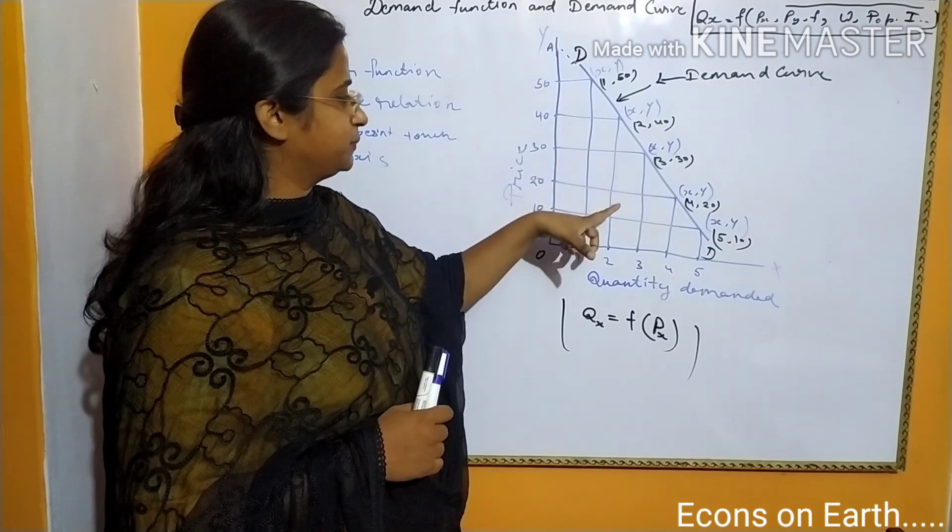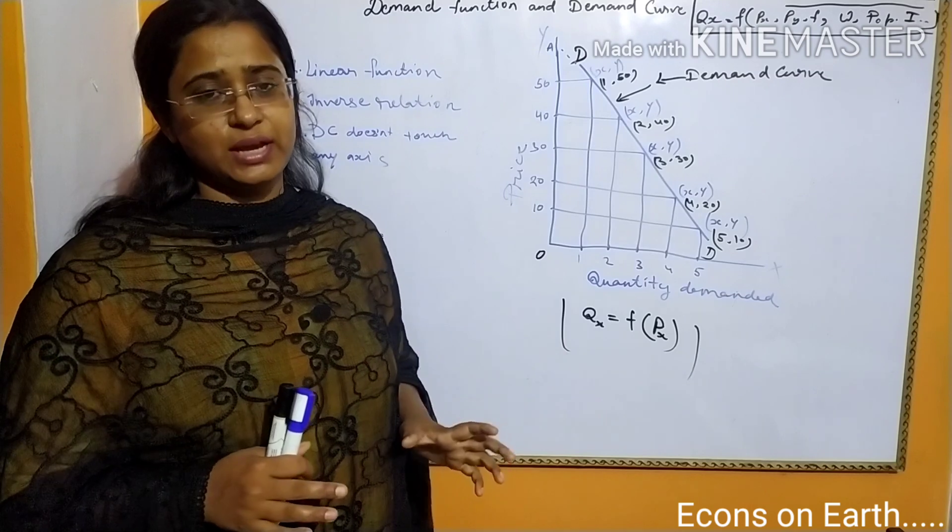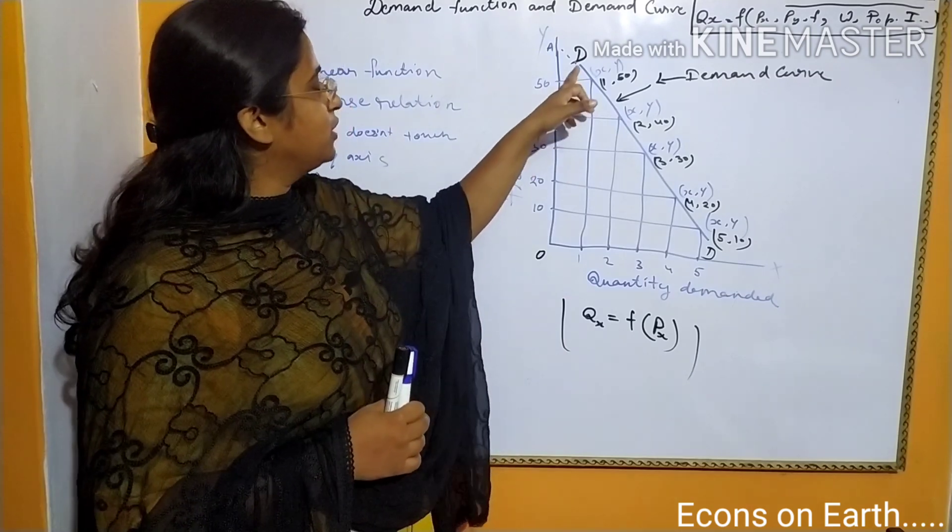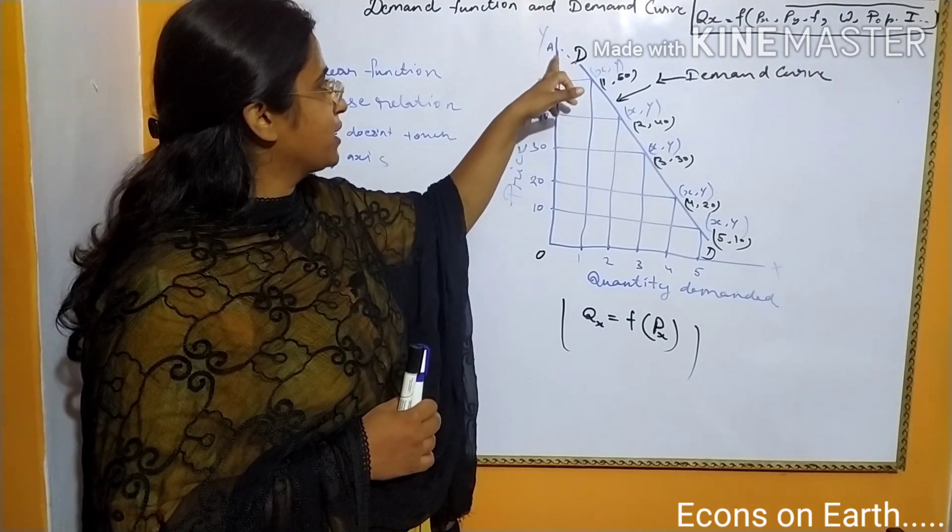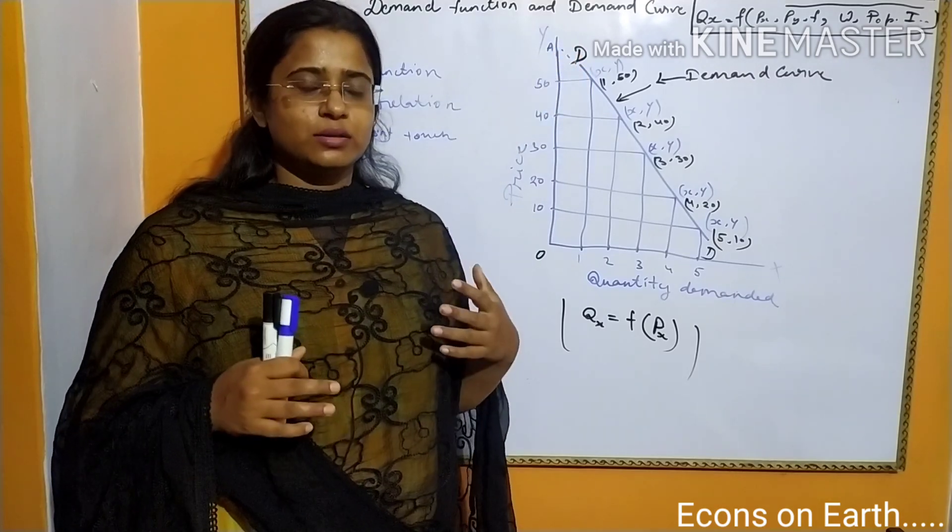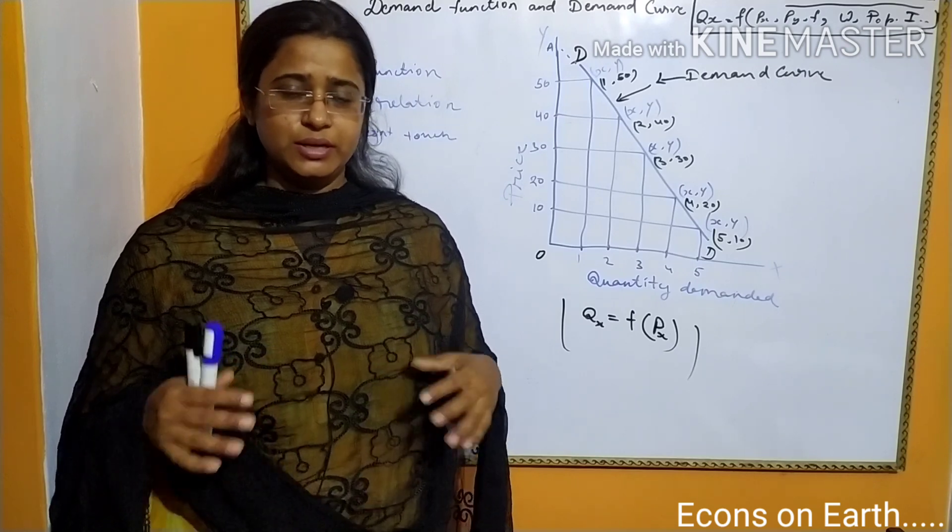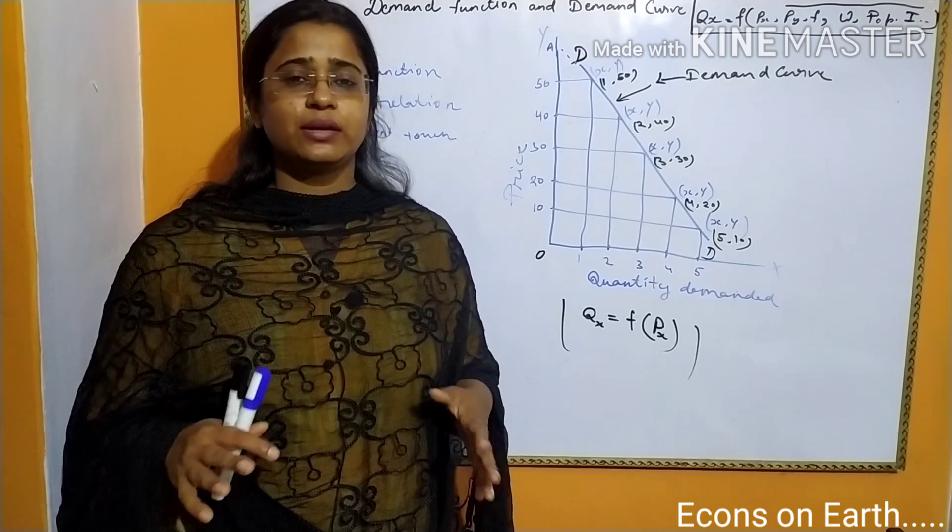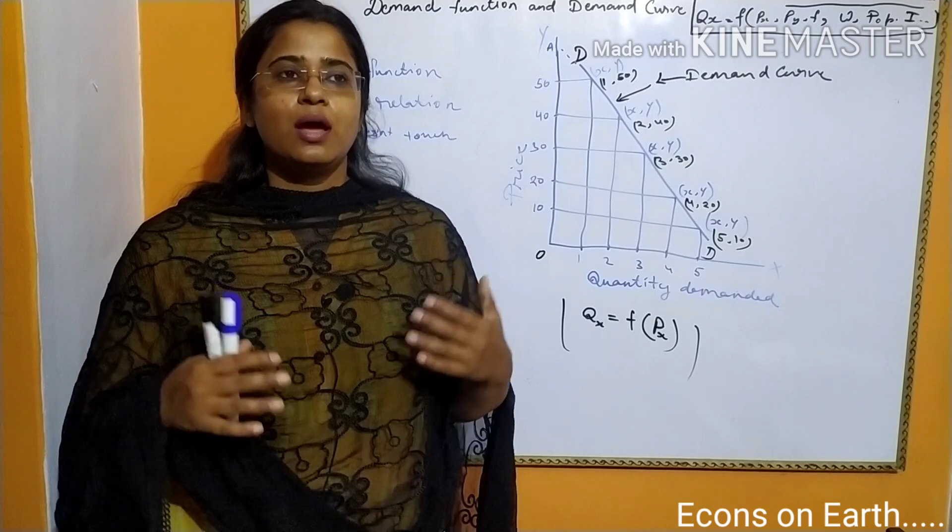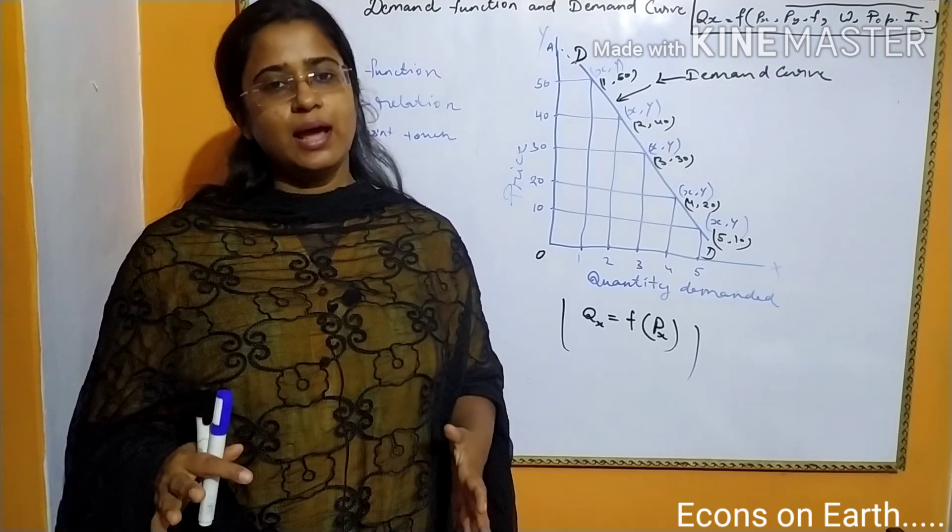One more thing is that the demand curve will never touch any of the axes. If the demand curve touches the Y axis, say at point A, it will show that the individual is having all his money in his pocket and he is not buying any of the commodity at all. In reality, this doesn't happen.